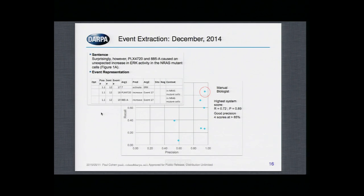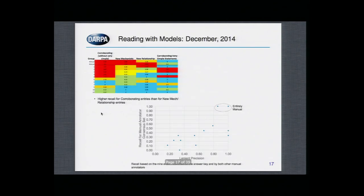We also asked whether machines could identify events in the text — for example, an unexpected increase in generic activity in NRS mutant cells. Again, the best system was doing almost as well as the biologist. Where machines didn't do anywhere near as well is on the new task of saying what the text claims about a prior model — machines have never been asked to do that before, and performance isn't very good. Interestingly, the biologists also couldn't agree: there's about 50% overlap between two biologists on what they think the text says about the model.